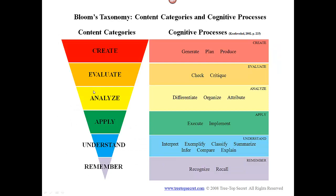Here we have content categories and cognitive processes. The content categories are what we just reviewed in the previous slide. The cognitive processes are the actions that a student is taking at each level. You can take time to understand these better, and you can definitely find different graphic organizers by doing a Google search. You'll find plenty of different representations and verbs that you can utilize.